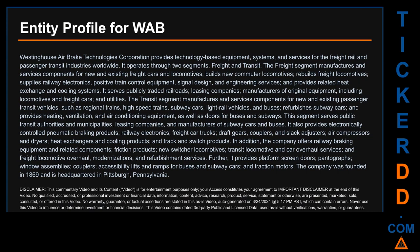It operates through two segments: freight and transit. The freight segment manufactures and services components for new and existing freight cars and locomotives, builds new commuter locomotives, rebuilds freight locomotives, supplies railway electronics, positive train control equipment, signal design and engineering services, and provides related heat exchange and cooling systems. It serves publicly traded railroads, leasing companies, and manufacturers of original equipment including locomotives, freight cars, and utilities. The transit segment manufactures and services components for new and existing passenger transit vehicles such as regional trains, high-speed trains, subway cars, light rail vehicles, and buses, and serves public transit authorities, municipalities, leasing companies, and manufacturers.